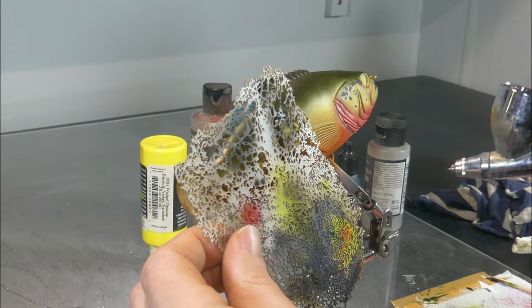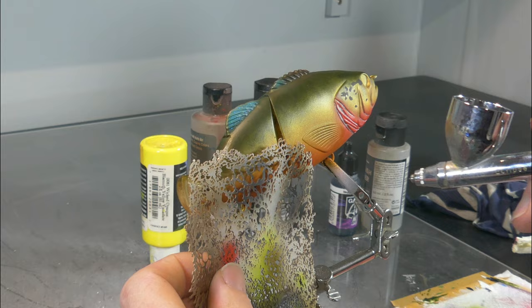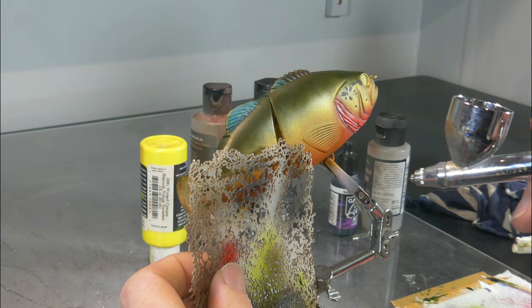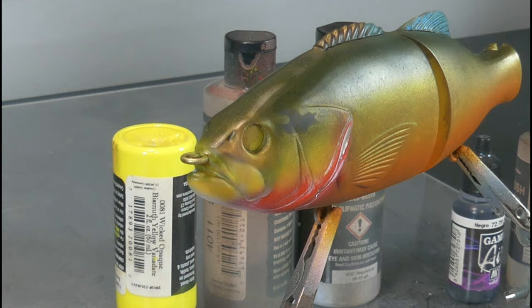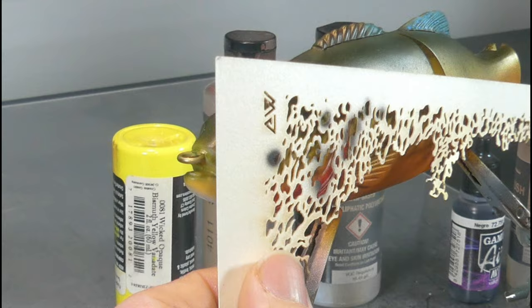And I decided to do a few spots on the belly and of course the typical spots on the gill plates. Now to do these spots I just laid down a little bit of black first, and that is just to know where my spots will be and what shape they will have, because we're going to go over that with a little bit of wicked opaque bismuth yellow vanadate later, and that's to create that yellow line around those spots.